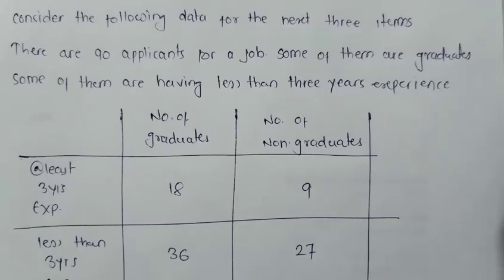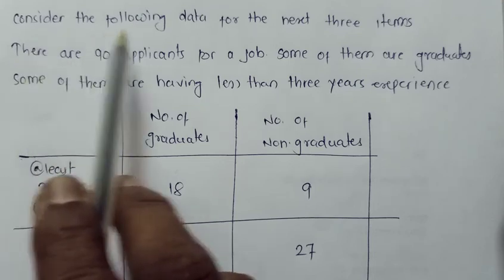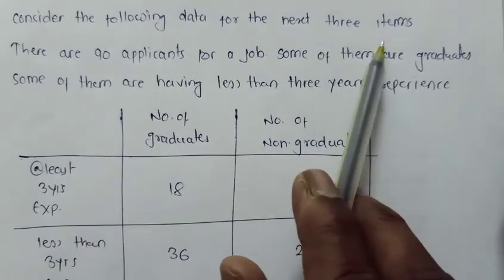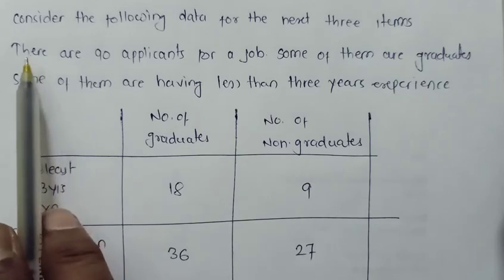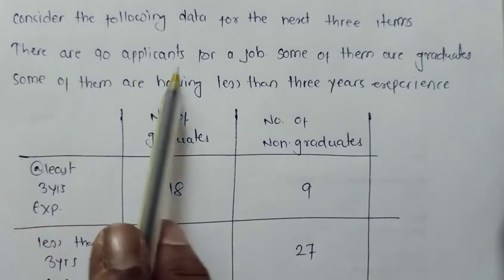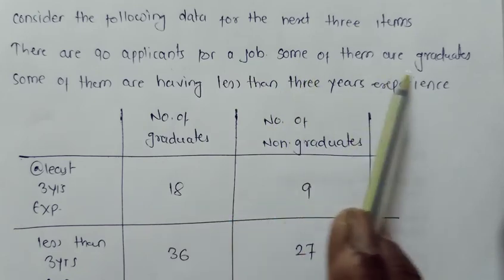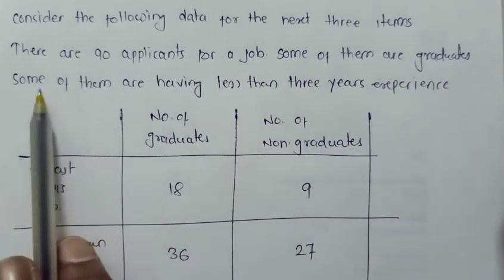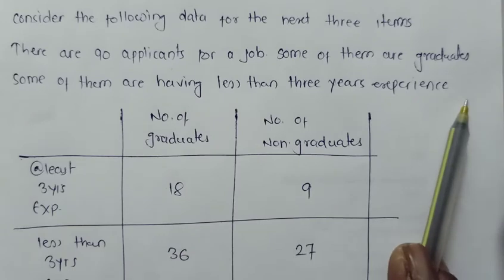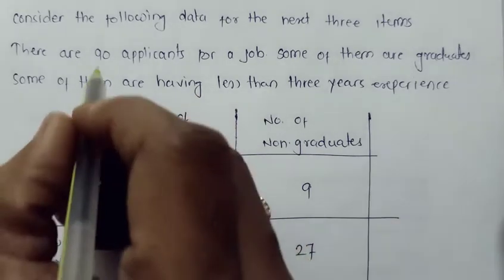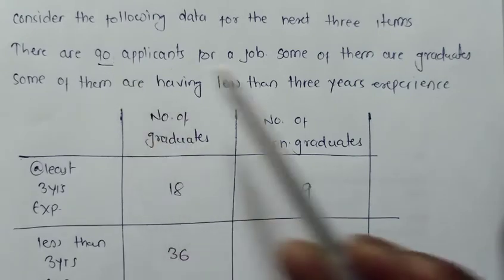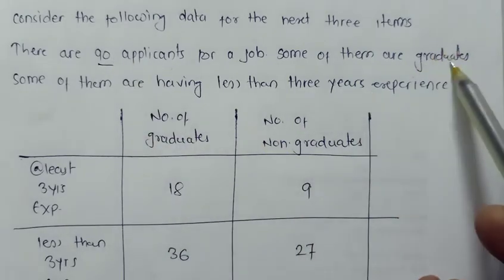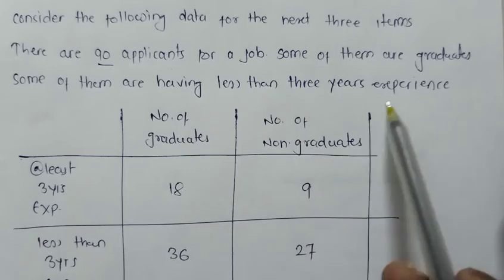Next question from the NDA 2022 first part. Consider the following data for the next three items. There are 90 applicants for a job. Some of them are graduates and some of them are having less than three years experience. Out of these 90, some of them are graduates and some of them are having less than three years experience.